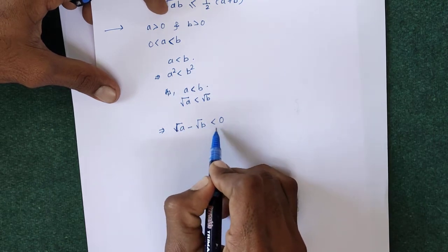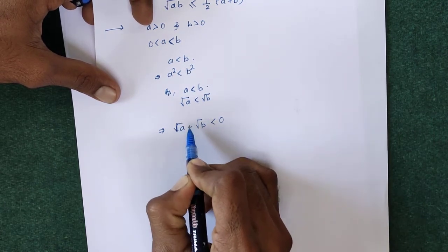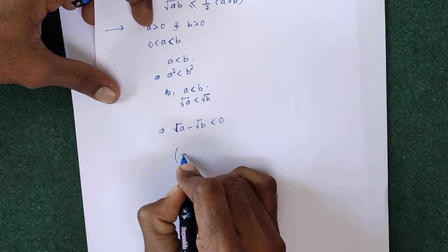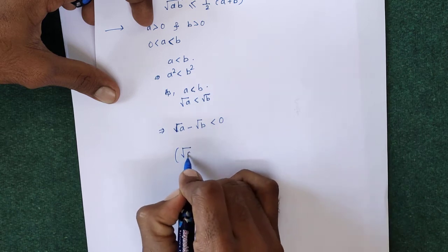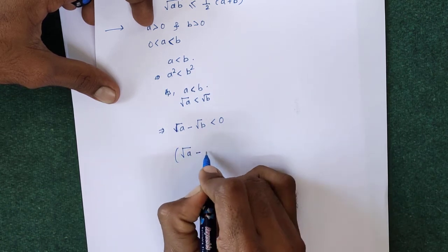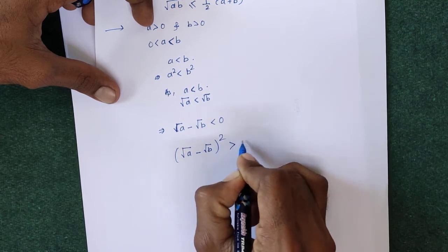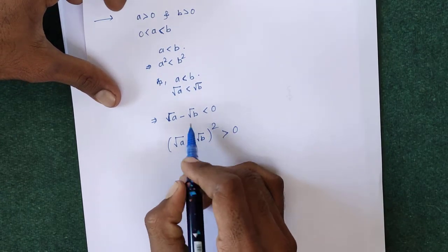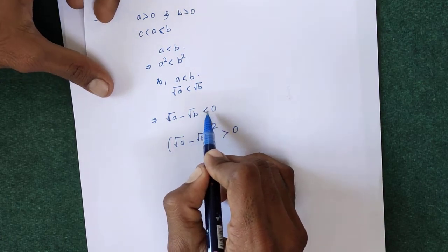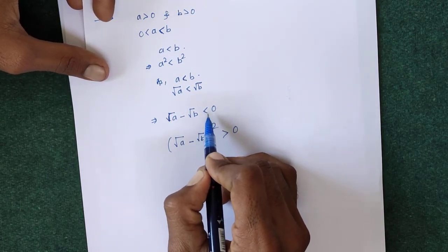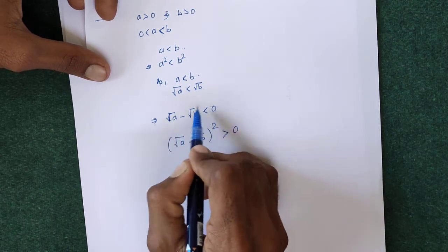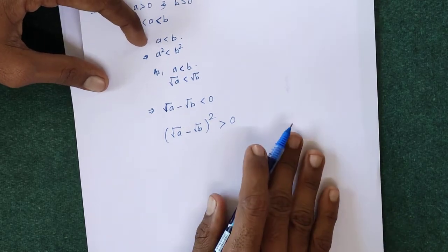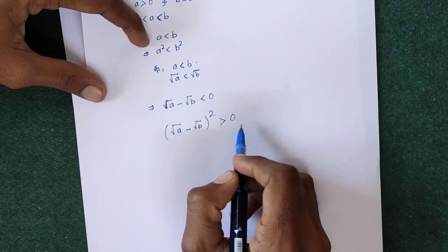Since √A − √B < 0, this subtraction is a negative number. We know that the square of a negative number is a positive number. So, squaring this, we get (√A − √B)² > 0.